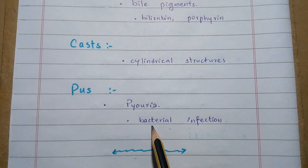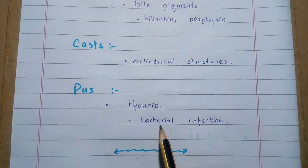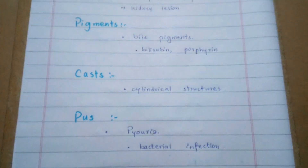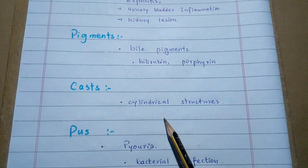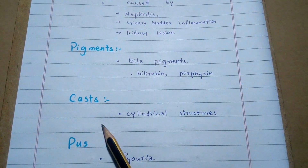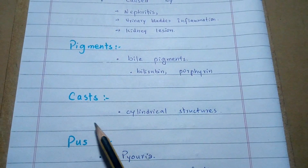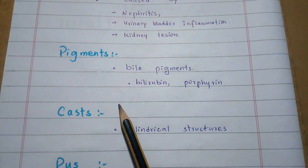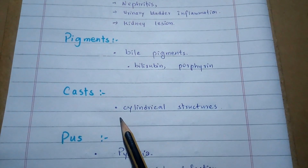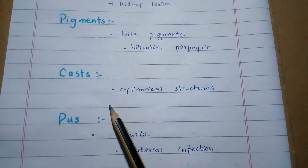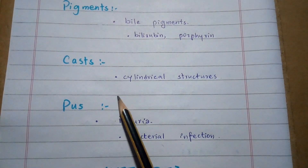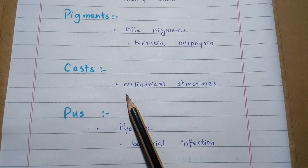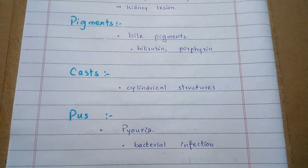So any of these components, if present in the urine, makes it abnormal. These abnormal constituents are important to indicate the diseases or complications associated with the clinical aspects of the urinary system. Thank you very much.